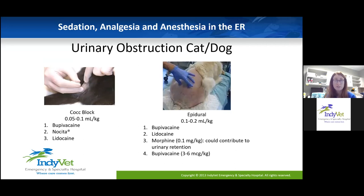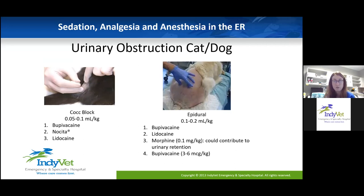For the coccygeal block in the cat — the sacral coccygeal or C1-C2 vertebrae. You can place a needle in there; I use a regular needle, though you can use a spinal needle. I do tend to use a spinal needle for epidurals. Drug options are listed there — I'm happy to share these slides.